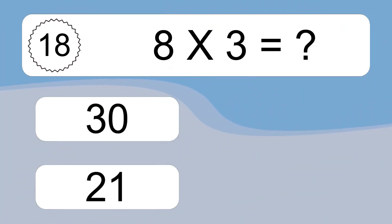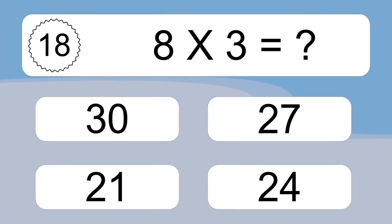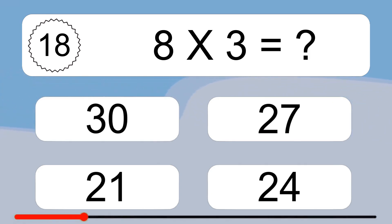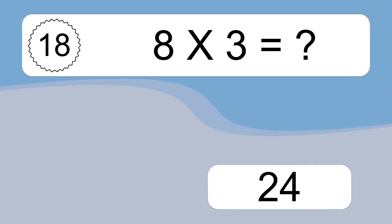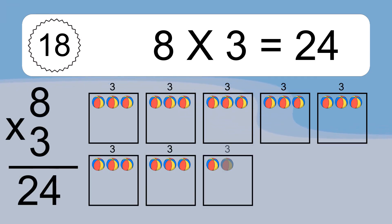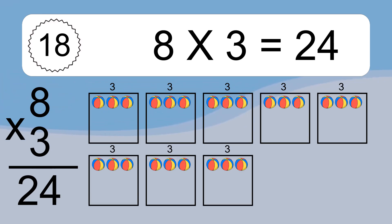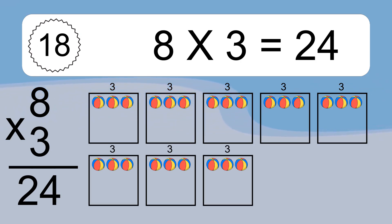8 times 3 equals what? 8 times 3 equals 24. We have 8 boxes, and each box has 3 colorful balls inside. If you count all the balls in all the boxes together, you will have 8 times 3 balls. This equals 24 balls.